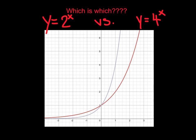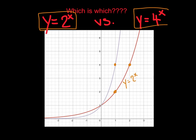We've got a little showdown here — two functions already graphed. One represents y = 2^x and one represents y = 4^x. Can you match them up? What caught my eye was the point (1, 2) and then (2, 4). Both of those points satisfy y = 2^x: 2 to the first equals 2, or 2 squared equals 4. So the red graph is 2^x. The purple graph passes through the point (1, 4), which satisfies 4^x, since 4 to the first equals 4.